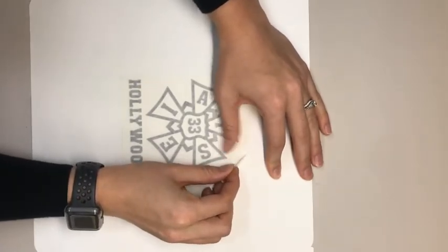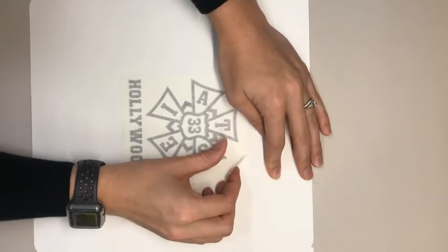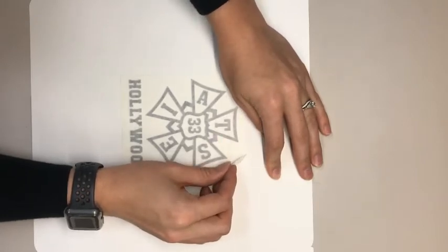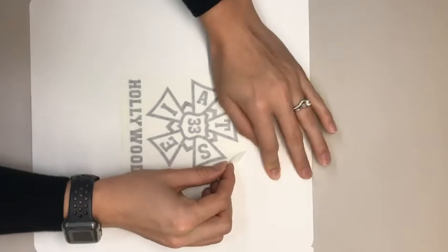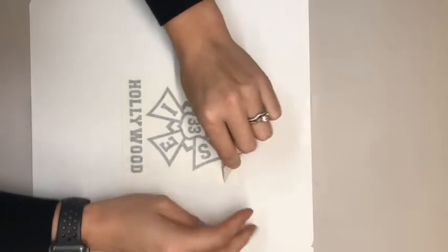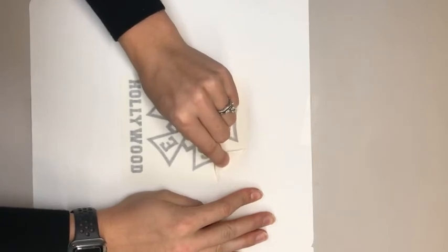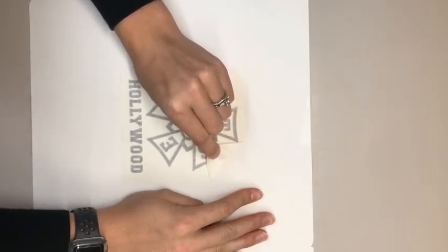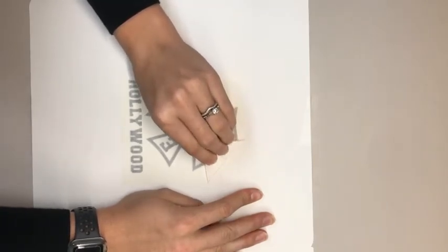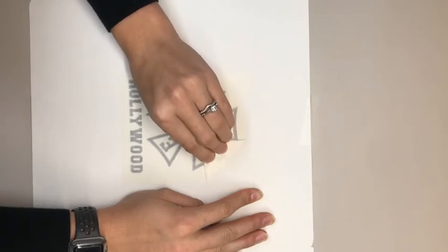So because of all the pressure you're supposed to put on this, always leave the pre-mask on first and then take it off later. So what we're going to do is start from a corner and we're going to peel the pre-mask off at a 45 degree angle. And what you're going to want to do is keep the pre-mask as close to the decal as possible when you're peeling it away.